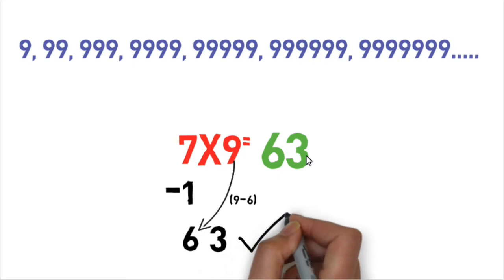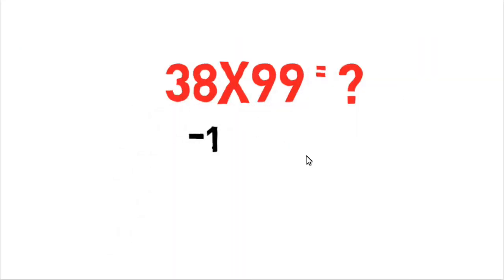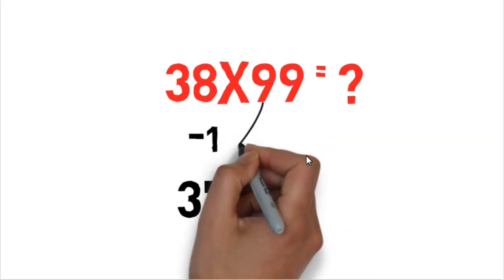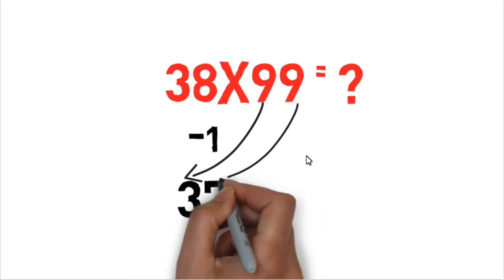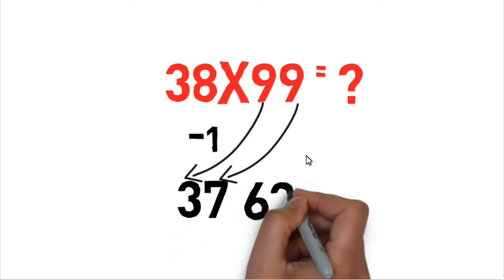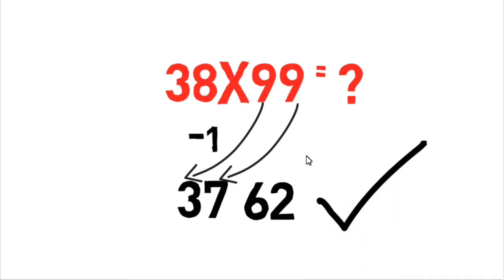So simple. Let's take another example: 38 into 99. So 38 minus 1 equals 37, and 9 minus 3 and then 9 minus 7, so that will come as 3762. So this is the answer.